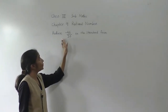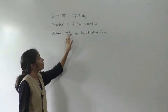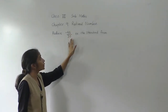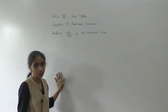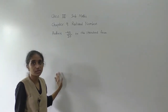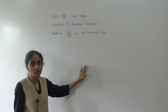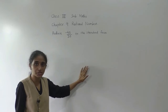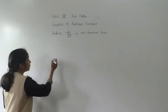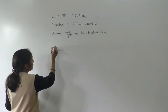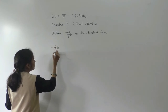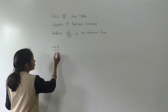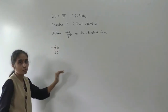Let's solve: reduce minus 45 upon 30 to the standard form. Just as we learned lowest terms in fractions, we have to do the same in rational numbers. The given number is minus 45 upon 30 and we have to find the standard form for this.